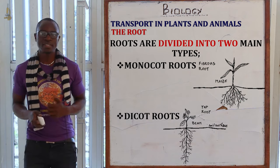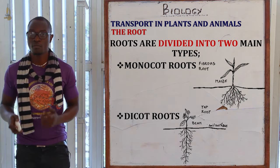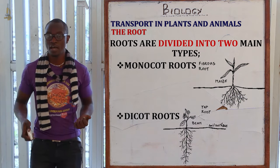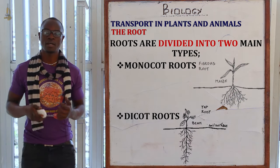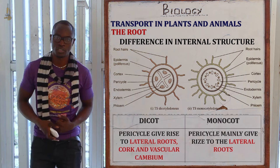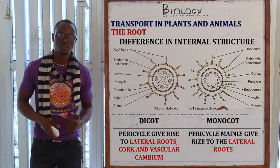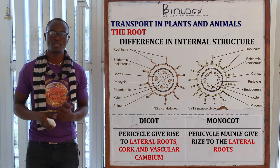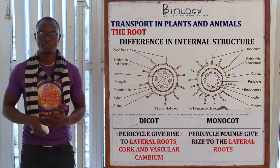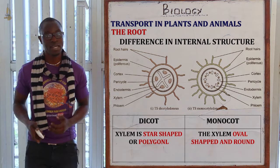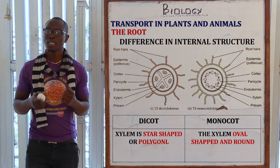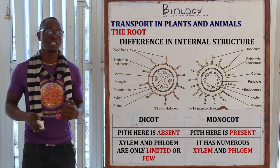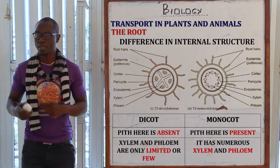Roots are mainly subdivided into two: the monocot root, which mainly has a fibrous root, and the dicot root, which mainly has a tap root. In the monocot root, the pericycle produces lateral roots, while in the dicot root the pericycle gives rise to lateral roots, the cork, and the vascular cambium. In the monocot root, the xylem is oval and round, while in the dicot root the xylem is star-shaped and polygonal. The pith is present in the monocot root but absent in the dicot root.